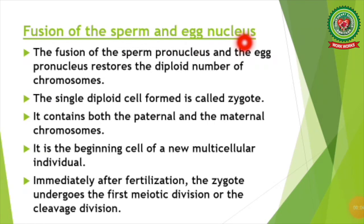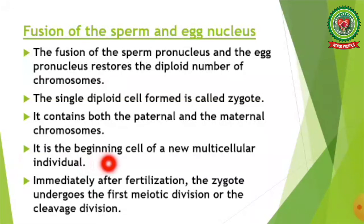Next is fusion of the sperm and egg nucleus. Fusion of the sperm pronucleus and the egg pronucleus restores the diploid number of chromosomes. The single diploid cell formed is called the zygote. It contains both the paternal and the maternal chromosomes and is the beginning cell of a new multicellular individual. Immediately after fertilization, the zygote undergoes the first mitotic division, or the cleavage division, and the process of fertilization is complete.